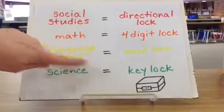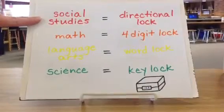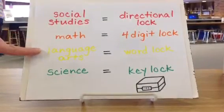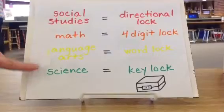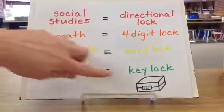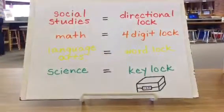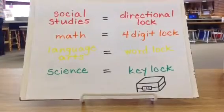So social studies, you're going to unlock a directional lock, math is going to be a four-digit lock, language arts is going to be a word lock, and science will be a key lock. Also with that black box, the key can be hidden in that black box, which has a three-digit code on it.